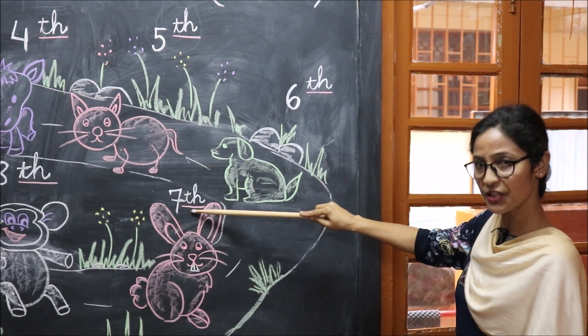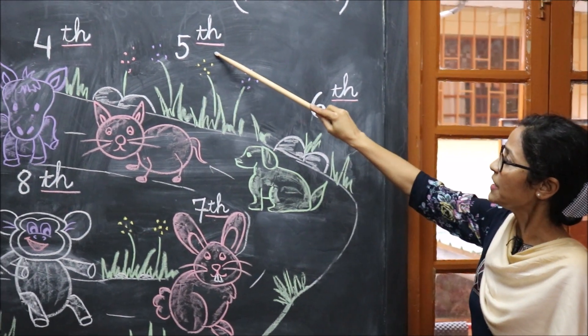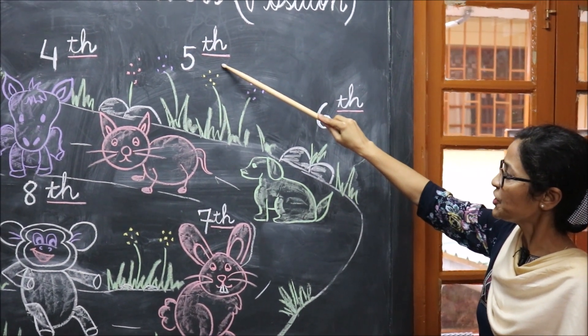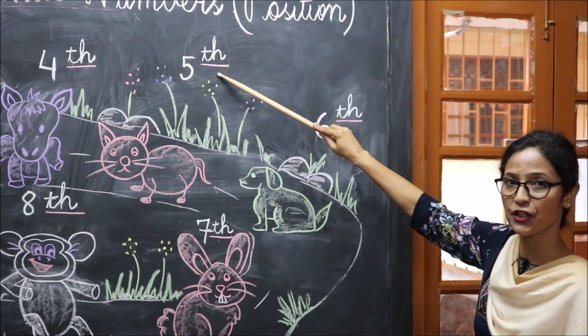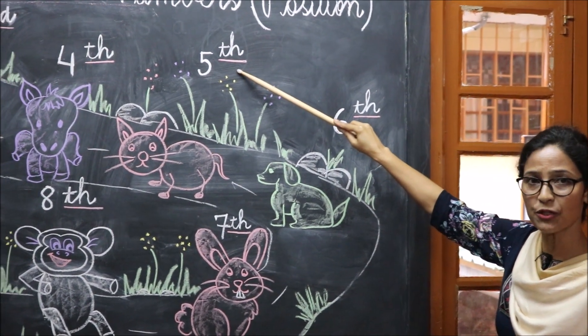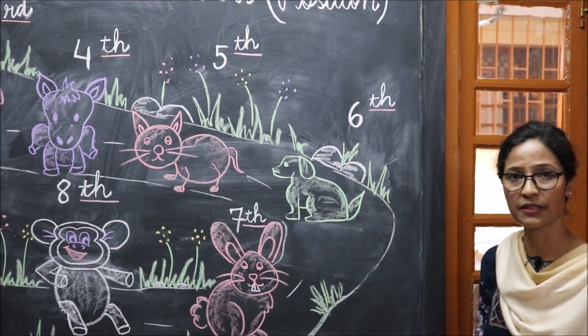Which animal is in the fifth position? The cat is in the fifth position. Thank you, children. See you at the next class.